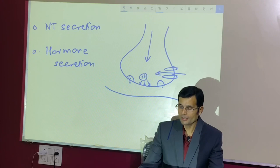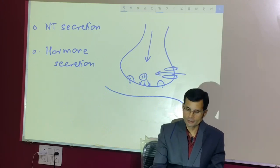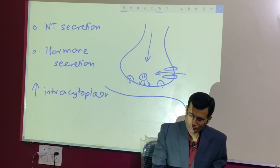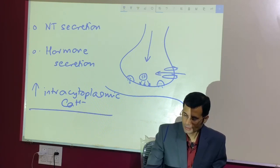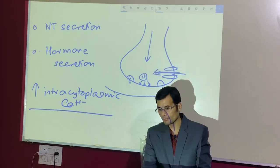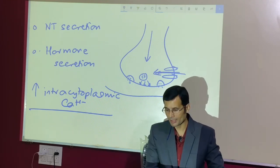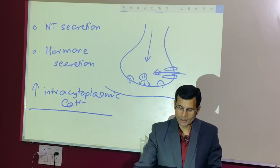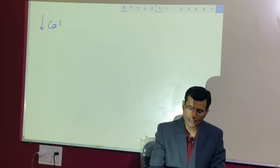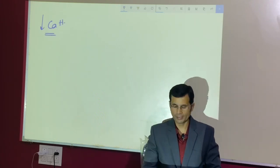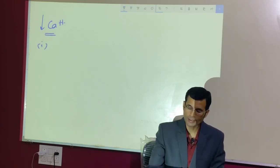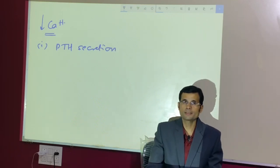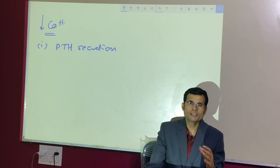All processes of exocytosis require an increased intracytoplasmic calcium — calcium enters, the vesicle moves toward the membrane, fuses with it, and releases its contents. However, there are two exceptions where decreased intracytoplasmic calcium causes exocytosis. The first exception is parathormone secretion by PTH-synthesizing cells: when serum calcium is decreased, the intracellular signal is in the form of decreased intracellular calcium, resulting in parathormone secretion.